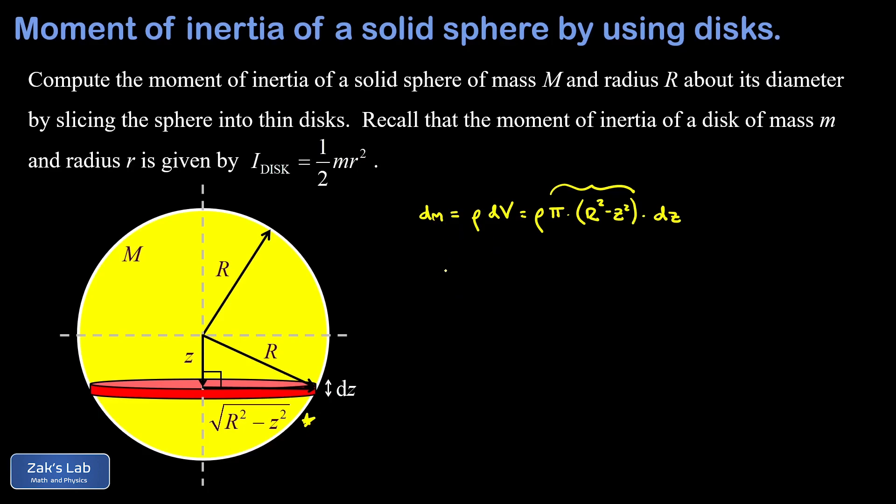Now we can write down the moment of inertia contribution of this disk and that's infinitesimal also. We're going to call that dI. We were reminded in the introduction to the problem that the moment of inertia of a disk is one half times its mass times its radius squared.